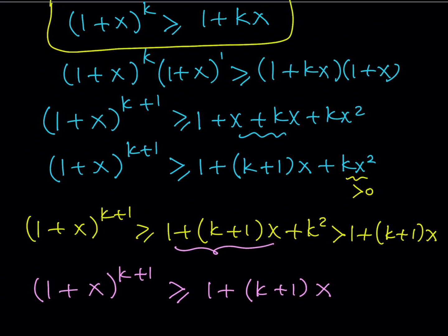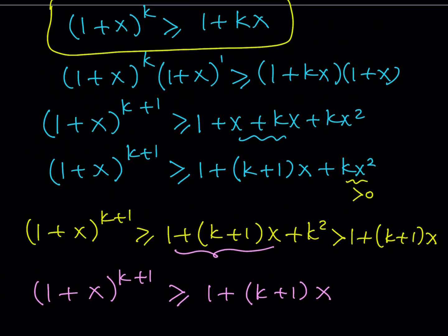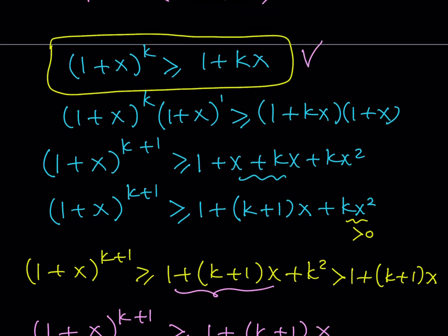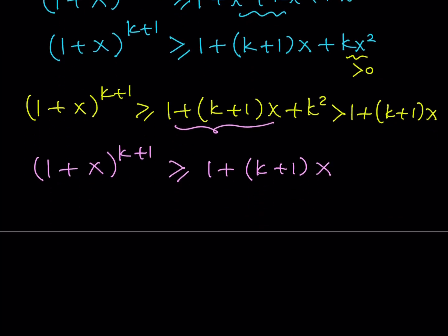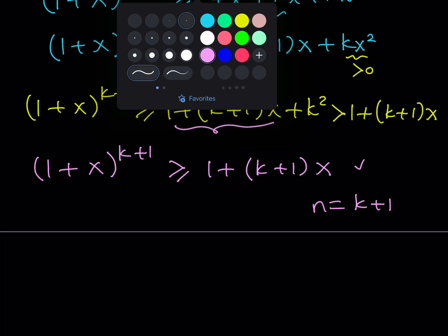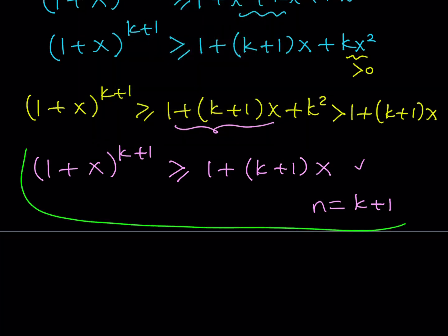So, as a result, we can safely say that the statement for n equals k implies the statement for n equals k plus 1. And this concludes the first proof method, which is induction.